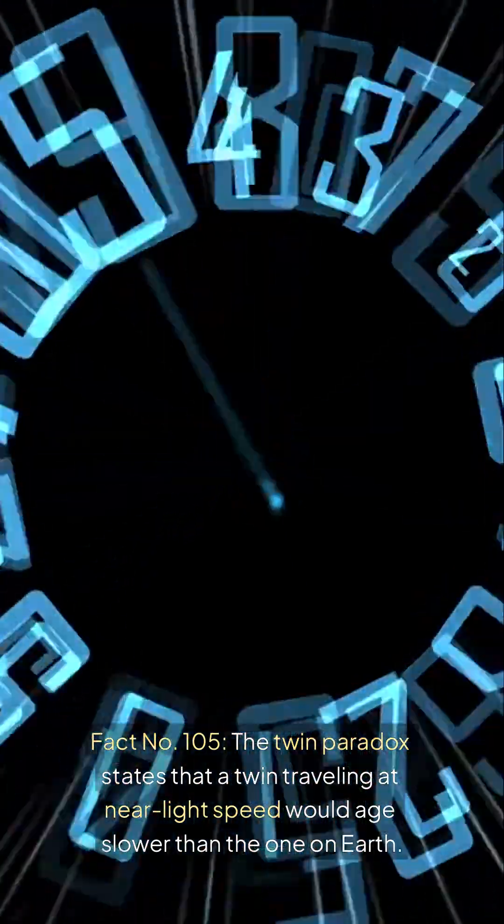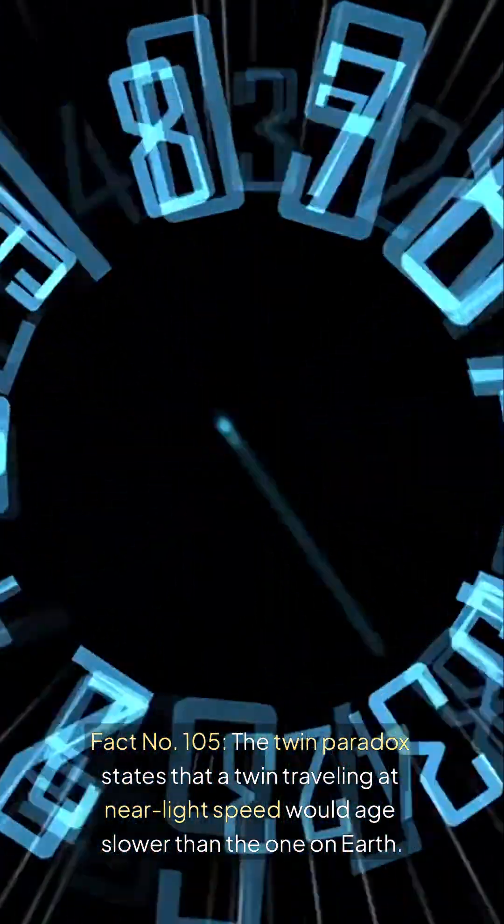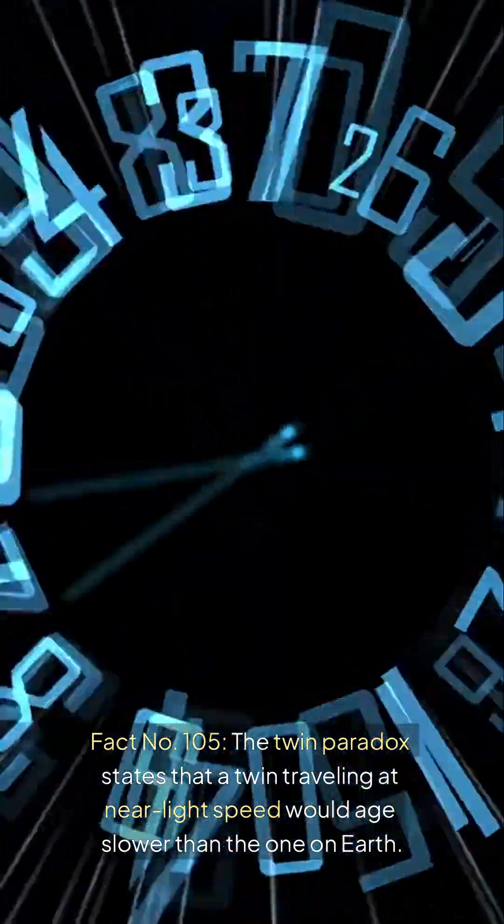Fact number 105: the twin paradox states that a twin traveling at near-light speed would age slower than the one on Earth.